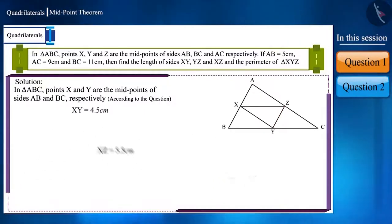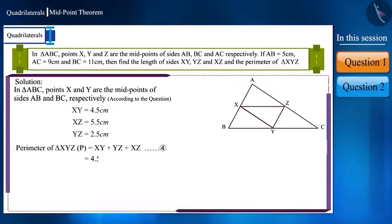And we know that the perimeter of any triangle is equal to the sum of its three sides. Therefore, we can write the perimeter of triangle XYZ as follows. By substituting the values of XY, YZ and XZ here, we can find the perimeter. Thus, we get the perimeter of triangle XYZ as 12.5 cm.